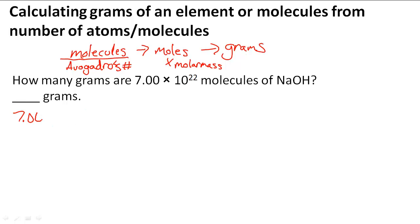So when I do this first step it's going to be 7.00 times 10 to the 22nd over 6.022 times 10 to the 23rd which is Avogadro's number. So when I do that I get 0.11624 moles of NaOH.